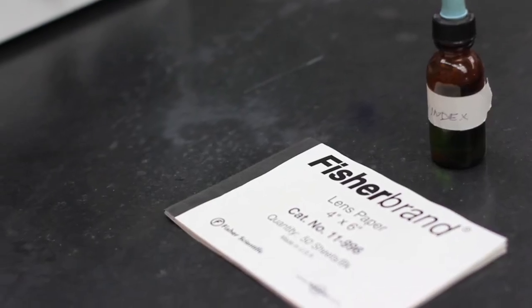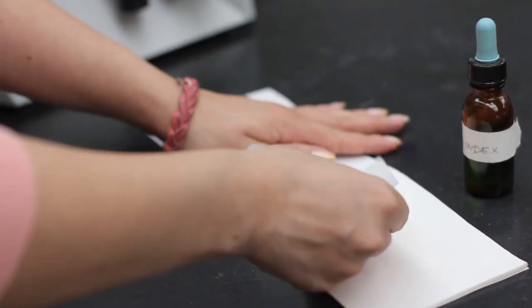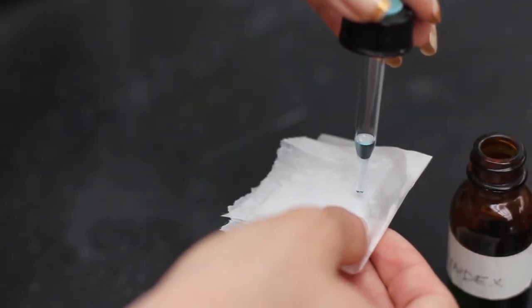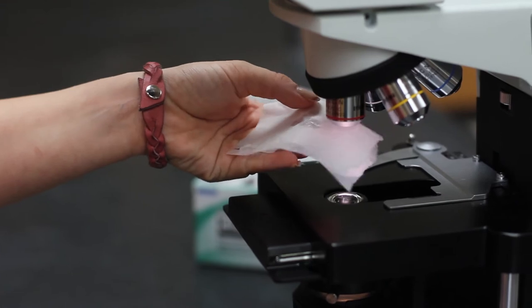Clean the lenses, both the objective and the oculars. Use only lens paper and a little glass cleaner if necessary. Do not use kimwipes to wipe any of the microscope lenses.